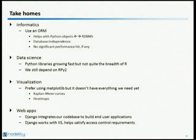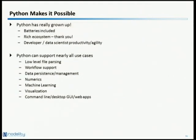Some take-home messages: in informatics, we really like using object-relational mappers — they abstract away database details without a significant performance hit, letting us focus on what the data means. In data science, Python libraries are growing fast but haven't quite reached the breadth of R, so we depend heavily on RPy2. In visualization, we prefer Matplotlib because we like to program in Python, and Django has been very helpful for web apps. Python supports almost all our use cases, from low-level file parsing all the way through building command-line, desktop, and web applications.